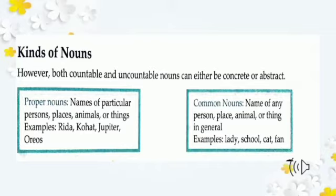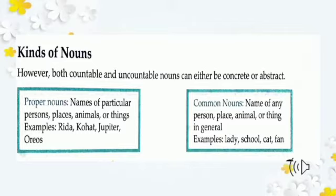We have been reading about proper and common nouns since class 3. A proper noun is a name of a particular person, place, thing, or animal — a specific name. For example, 'Raida' is a specific girl's name — a proper noun. But 'girl' could be any girl — that is a common noun. Similarly, 'Karachi' is a specific city — a proper noun. But 'city' refers to many cities — that is a common noun. Other examples: Koharto is a proper noun (specific city), Jupiter is a proper noun (specific planet).